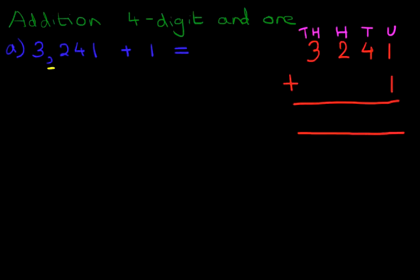Now you know the routine by now. What we do is we add each of the columns one by one. Well, there's only one real column we have to add here, and that's the units column. So what is one plus one? Nice and easy. The answer is two.